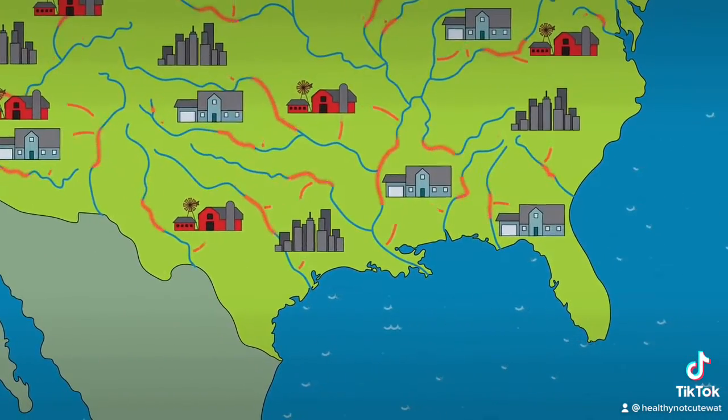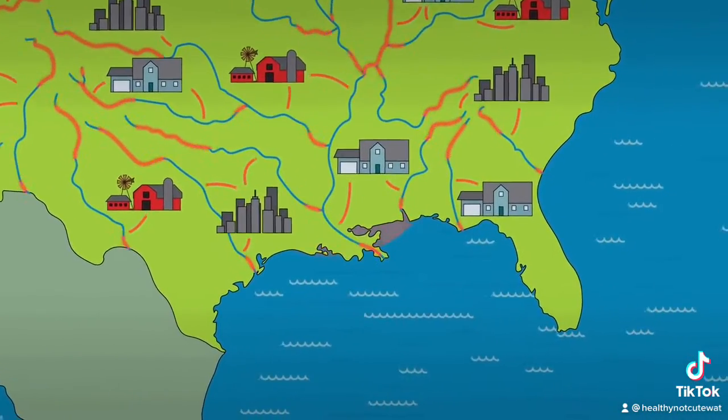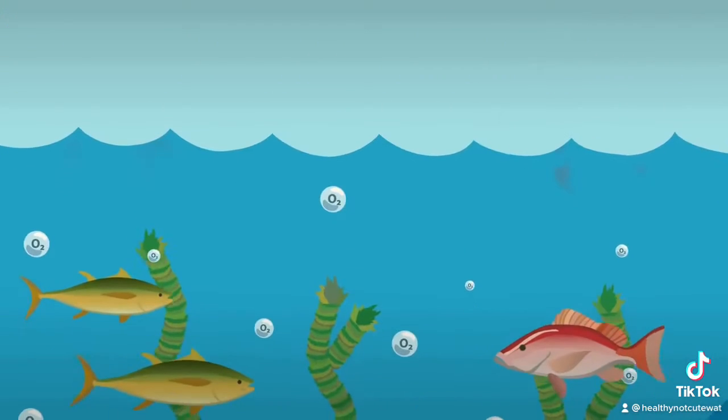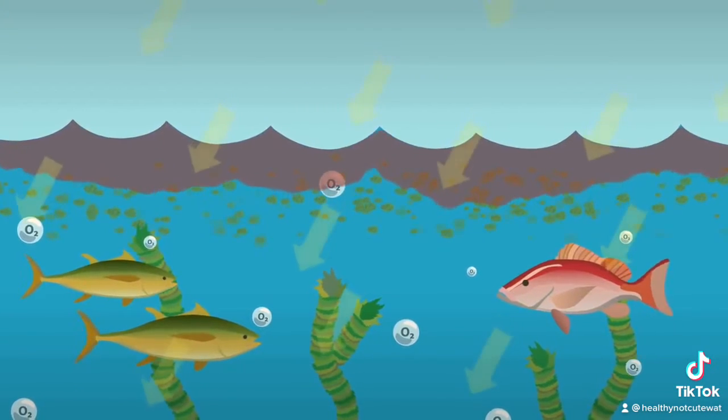It all starts when nutrients get into lakes and oceans. Remember, what's waste to humans can be food to plants and other creatures. Nutrients feed algae like they do other plants.